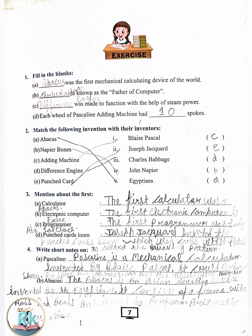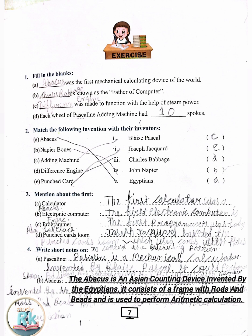B. Abacus. The Abacus is an Asian counting device invented by the Egyptians. It consists of a frame with rods and beads and is used to perform arithmetic calculations.